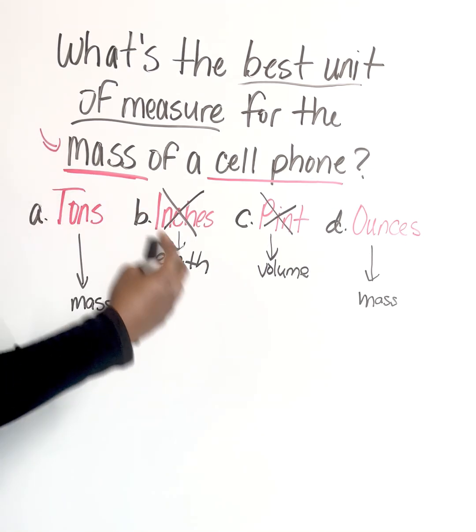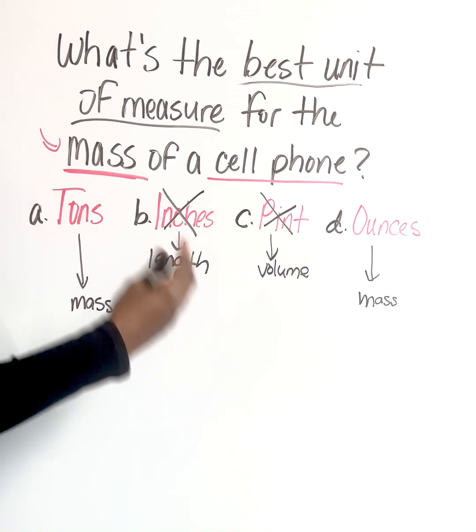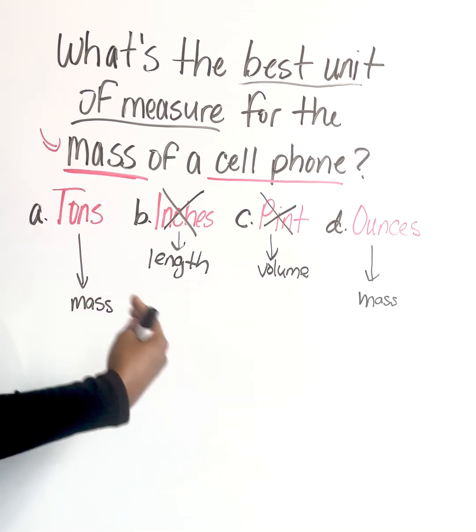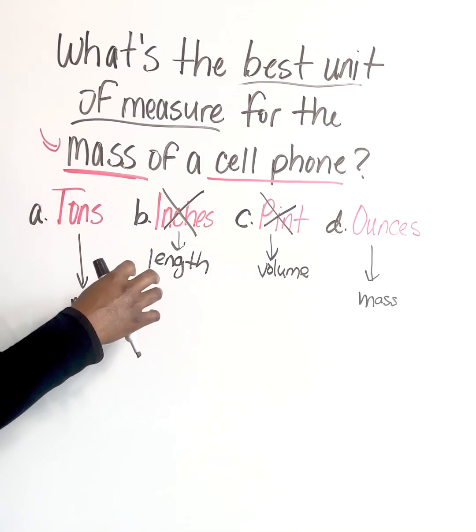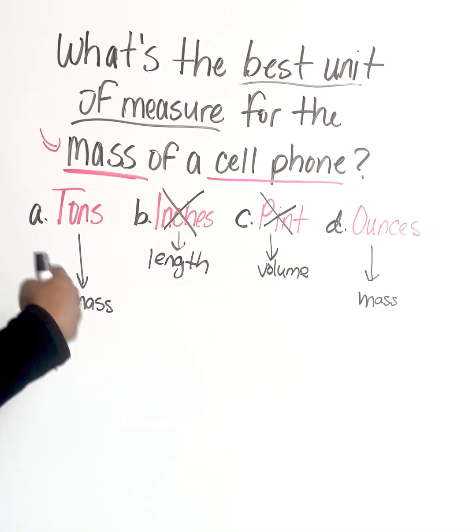Like we talk about cars, they weigh tons. We talk about elephants. Things that are extremely heavy are measured in tons. When we think about ounces, I always think about things that are extremely small.